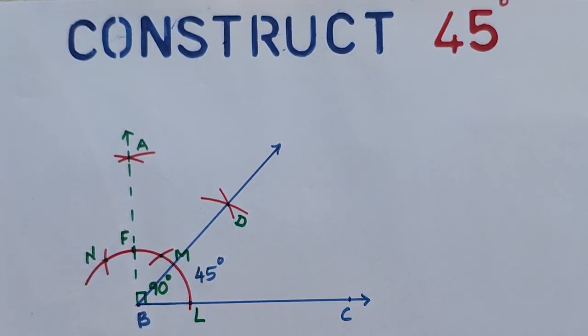So this is how to construct 90 degrees, then bisect it to get 45 degrees. Thank you.